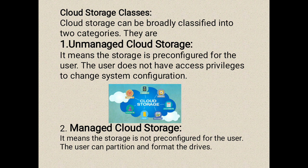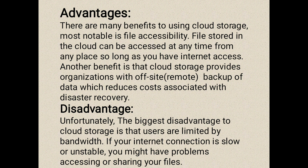The first category is unmanaged cloud storage, which means the storage is pre-configured for the user and the user does not have access privileges to change the system configuration. The second storage class is managed cloud storage, which means the storage is not pre-configured for the user and the user can partition and format the drives.